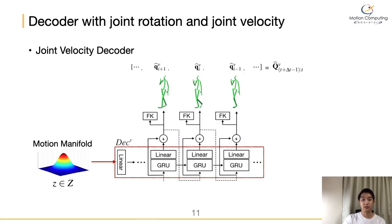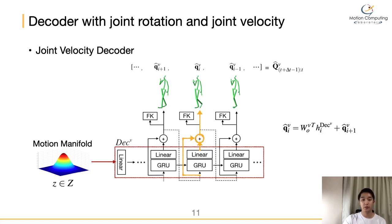Next, let me explain the joint velocity decoder. The joint velocity decoder has a similar structure to the joint rotation decoder. The main difference is that it uses a residual connection to generate the pose at frame i. This residual network learns the difference between the current frame pose and the previous frame pose. Therefore, the model predicts the angle difference or velocity and integrates it over time.